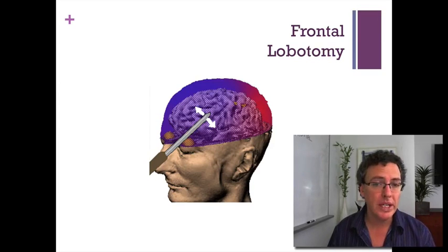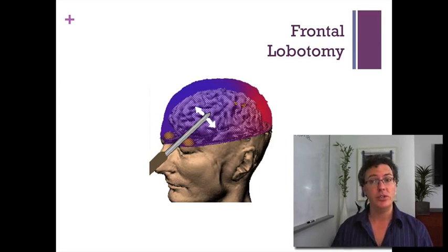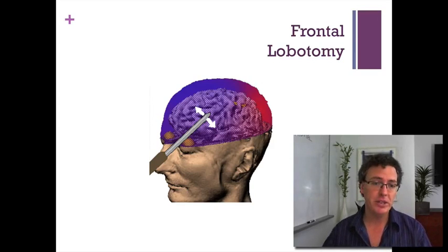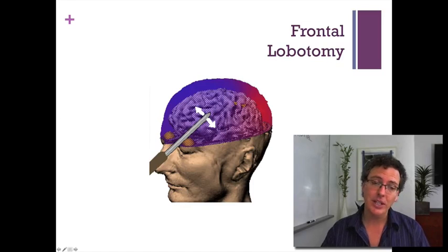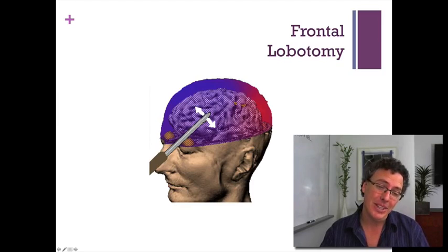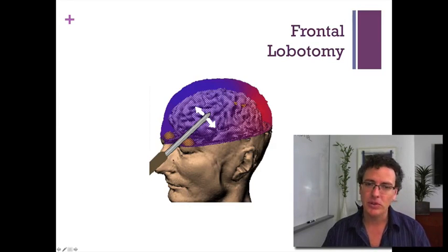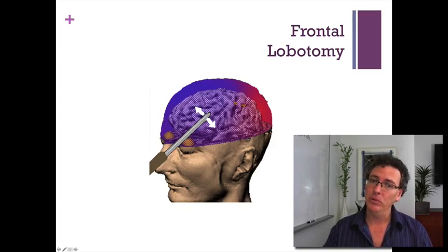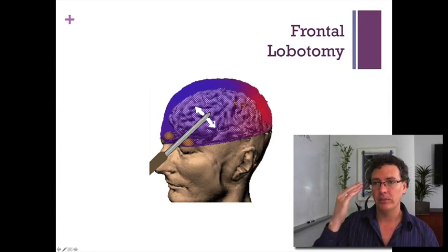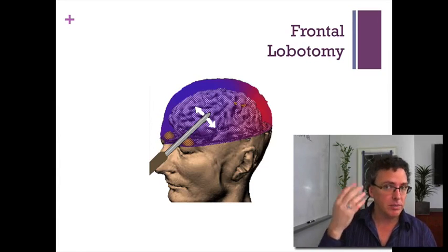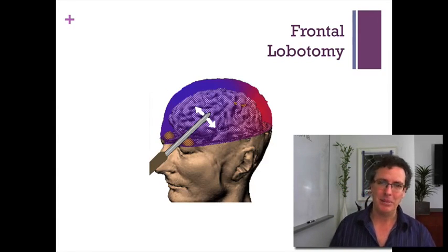It's a very easy procedure — they take this little spatula-looking instrument, pass it up usually through the space near the eye, slide it up and move it side to side. What they're essentially doing is severing connections from the very front of the lobe to the motor areas near the back of the frontal lobe.